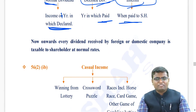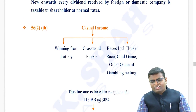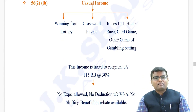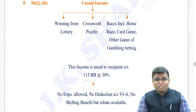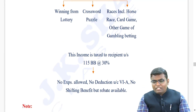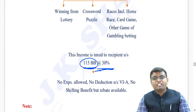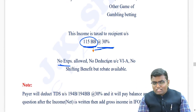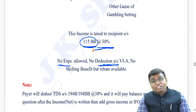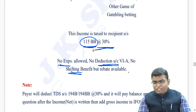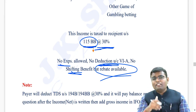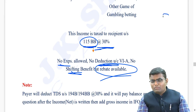Dividend is now taxable to each and every shareholder under IFOS at slab rates. The next income is section 56 subsection 2 clause (ib) - casual income. If you have winning from lottery, crossword puzzles, card game, other games, gambling, betting - this kind of income which totally depends on luck - it will be taxable to the recipient under section 115BB at the rate of 30%. Against this income you cannot claim any expenditure, you cannot claim any deduction under Chapter VI-A, and you cannot have the shifting benefit also.